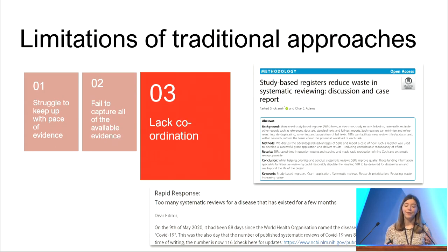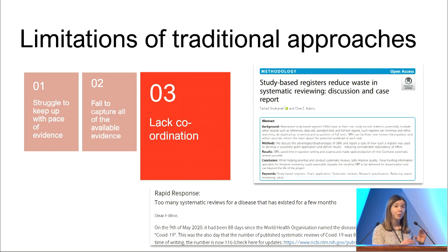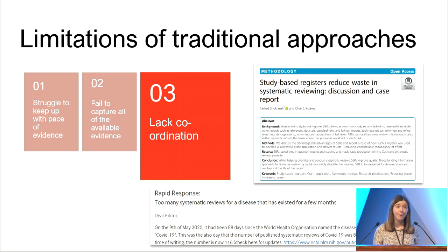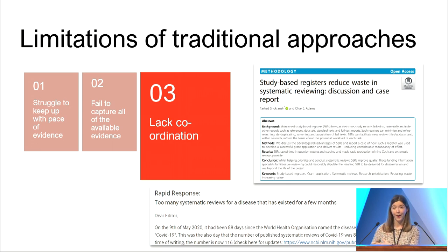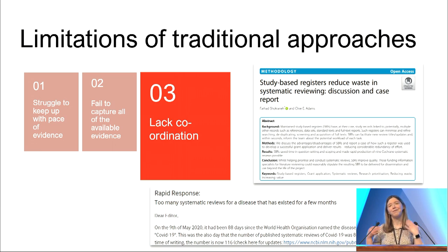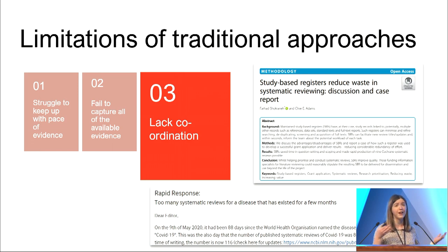Thirdly, I think there's a bit of a lack of coordination. There might be too many systematic reviews in one area and not enough in another. Also, a form of research waste quite often happens where one research group will extract lots of data from hundreds of different studies and then not put that data anywhere publicly. Then another systematic review group doing a review with some overlap has to re-extract that data from the beginning again. We need to work in a more coordinated way towards better evidence synthesis approaches.